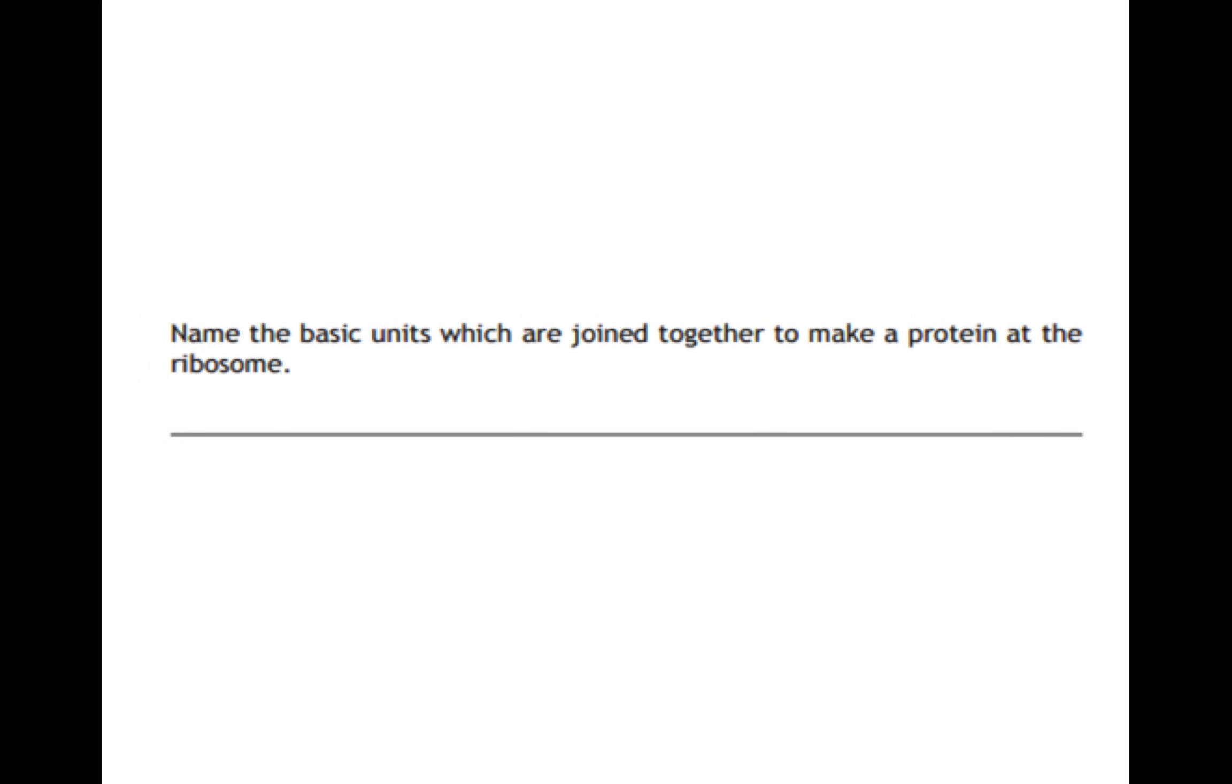In this question, it's asking you the basic units which are joined together to make a protein at the ribosome. You should hopefully remember that the mRNA comes to the ribosome, where it's read, and it's then turned into amino acids. Amino acids are joined together to make a protein at the ribosome.